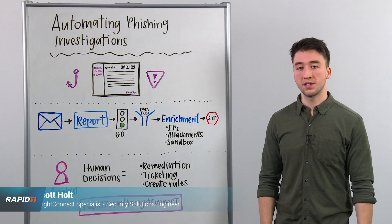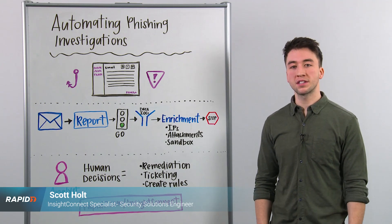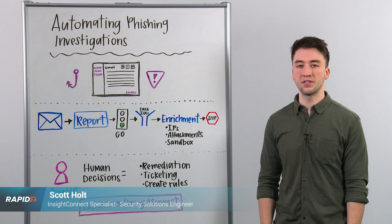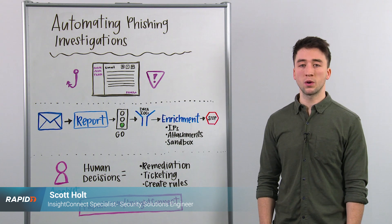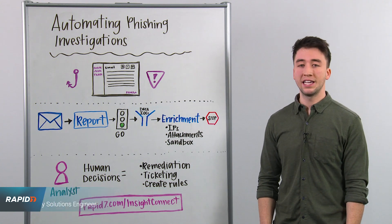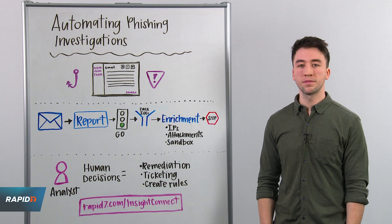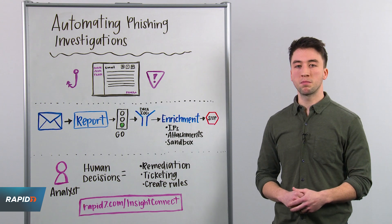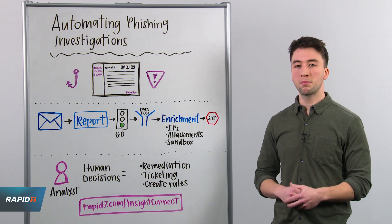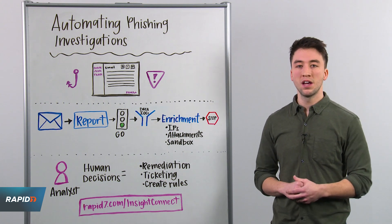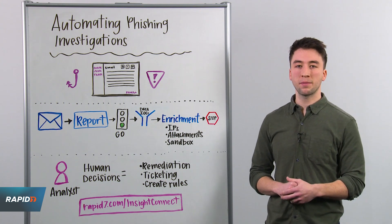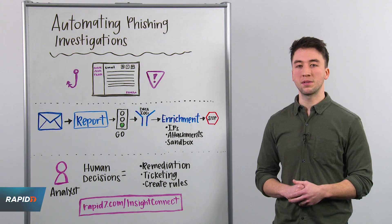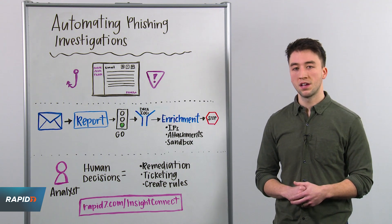Welcome to this week's Whiteboard Wednesday. My name is Scott Holt and I'm a product specialist for Rapid7's security orchestration and automation solution, InsightConnect. Today I want to talk about a specific use case we see at Rapid7: phishing investigations.